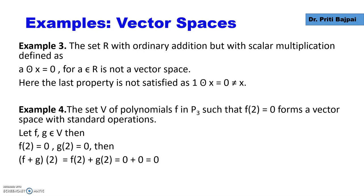If f and g are two polynomials from V, then they will satisfy the property of V. That is, f(2) will be 0 and g(2) will be 0. If we add the two polynomials, we get (f+g)(2) = f(2) + g(2). As both of them are 0, this becomes 0. Closure property is satisfied with respect to addition.